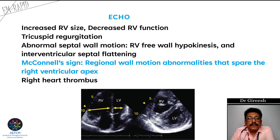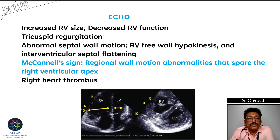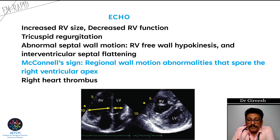ECHO is another important investigation in ER to pick up massive pulmonary embolism. In small pulmonary embolism, you may not see any change. Classical ECHO findings in massive PE include: increased RV size, reduced RV function, tricuspid regurgitation due to enlarged RV, abnormal septal movement with RV free wall hypokinesia, and interventricular septal flattening. The McConnell sign — regional wall motion abnormalities sparing the right ventricular apex — can also be seen. The large RV can compress the LV, further reducing cardiac output, leading to syncope or loss of consciousness.